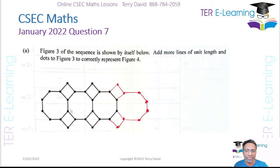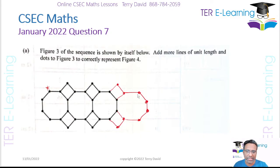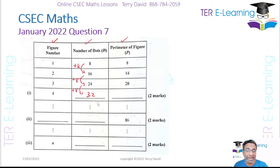We actually drew figure 4, so we can count the dots. Starting from one point and counting all the dots around the figure, I get 32. So from the diagram I'm also getting 32.